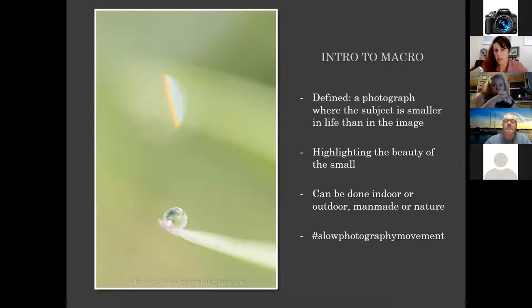As an introduction, macro photography is photography where the subject is smaller in life than in the image, or it's a one-to-one ratio. A lot of times you'll see macro lenses labeled as a one-to-one ratio, which means that when you photograph a subject you're photographing it at life size — so it's the same size in the camera that it is in life basically. It highlights the beauty of the small things and small details within nature.